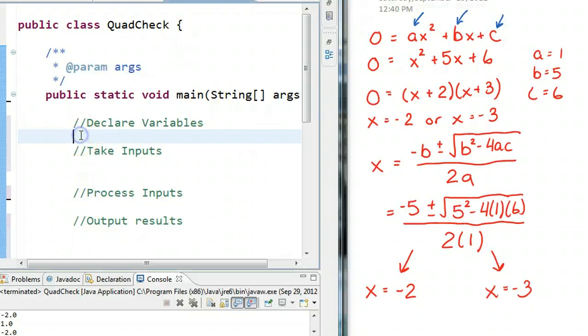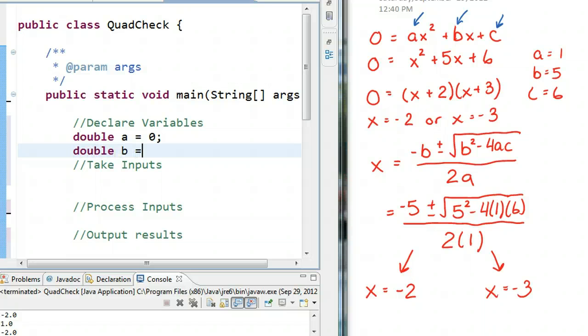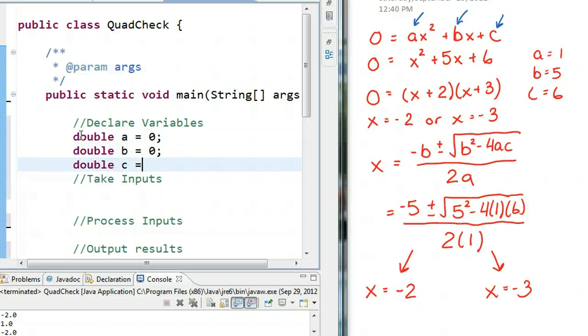So, if I come over here, I'm going to make a variable A, B, and C. Now, the question comes, what type do we want to make this variable? Even though in this case, everything looks like nice integers, we do have cases where it might be a decimal number. So, we're going to make them doubles. So, double a equals 0, double b equals 0, double c equals 0.